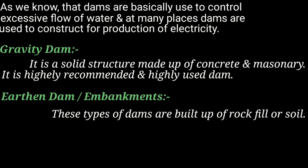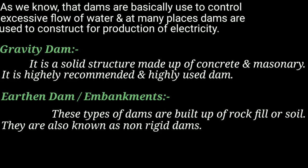Earthen dams are built up with rock fill or soil. If the water flow is through soil, we call them earthen dams. If the flow is through rock fill, we call them rock fill dams. These types of dams are also known as non-rigid dams.